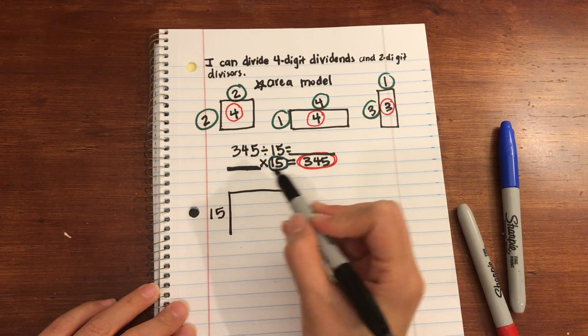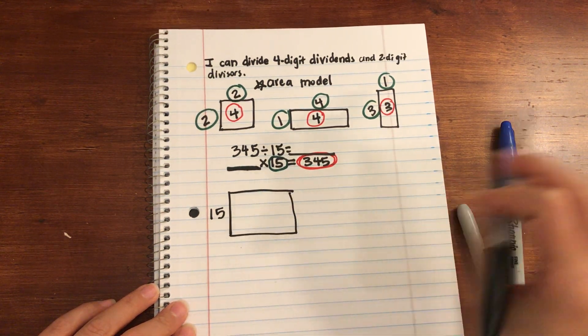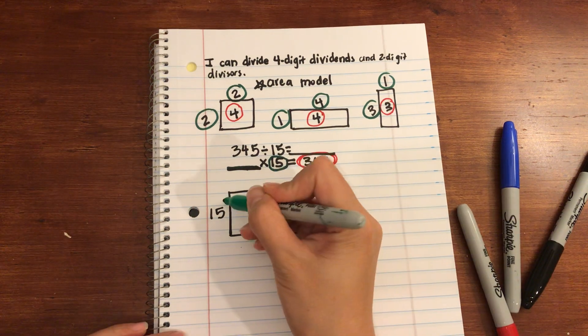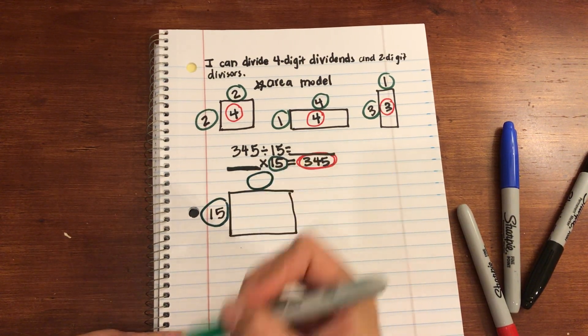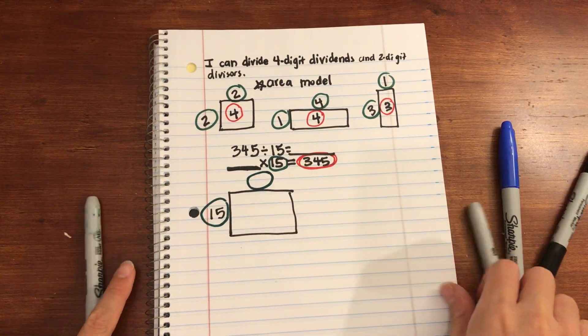And up top is going to be my missing other factor. I don't know what that is yet. And on the inside is going to be my product.